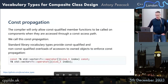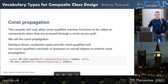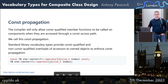The compiler will only allow const-qualified member functions to be called on components when they are accessed through a const access path — we call this const propagation. Standard library vocabulary types provide const-qualified and non-const-qualified overloads of accesses to owned objects. The canonical example is std::vector and its access operator: if your vector is const and you call it, you get the const version, so you can't modify the element; if you have a non-const reference, you can modify the underlying type.